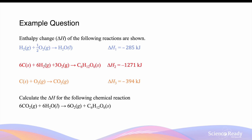Here we have the enthalpy of formation values for water (liquid), glucose (solid), and carbon dioxide gas — three of the chemicals in the chemical equation for photosynthesis. We can use these three values to calculate the overall enthalpy change for photosynthesis.